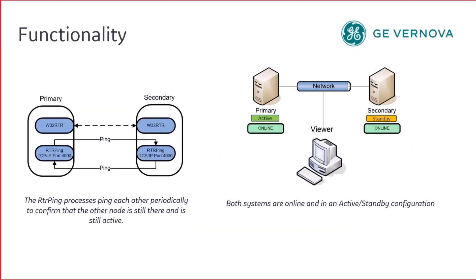How do the servers detect that a failure has occurred? The primary and secondary are constantly checking to make sure that the other node is still there. They do this by using a process called RTR ping. This process's sole responsibility is to actively ping and respond to pings to and from the other node in the redundant pair. If a ping does not come back in the appropriate timeframe, then an automatic failover is initiated.